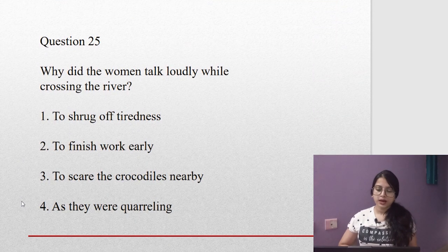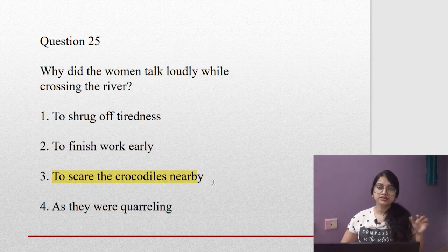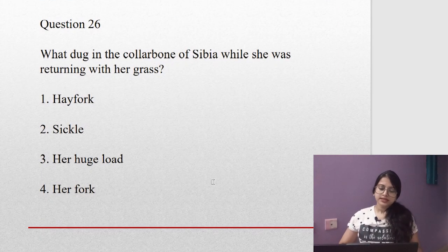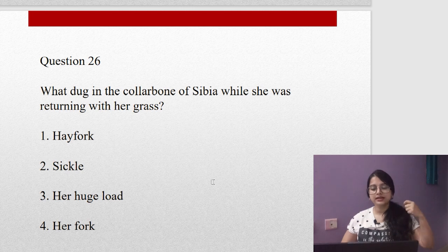Question number twenty-five: Why did the women talk loudly while crossing the river? Remember when they were talking in groups from the end to the first one? To shrug off tiredness? No. To finish their walk early? No. To scare the crocodile nearby? Yes, because they knew that the crocodile was there in the river somewhere. If they keep talking, the crocodile will also be afraid and will not attack them. Question twenty-six: What dug in the collarbone of Sibia while she was returning with her grass?